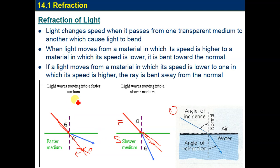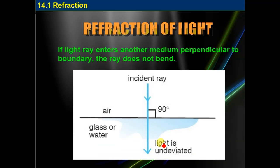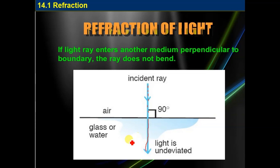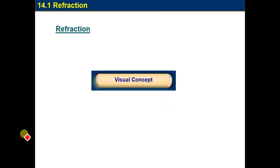Now let's suppose that our incident ray is coming perpendicular to the surface — the boundary between air and the other medium. In this case only, if the incident ray is perpendicular to the surface, the ray and the normal are on the same line, so there is no reflection and no bending of light. The light will continue straight on. So if a light ray enters another medium perpendicular to the boundary, the ray does not bend.